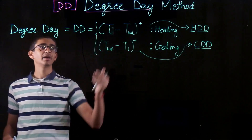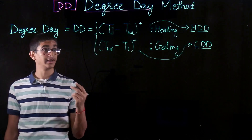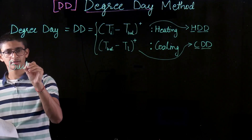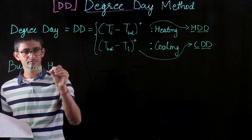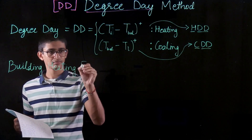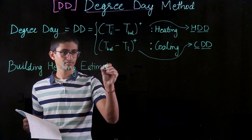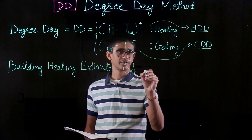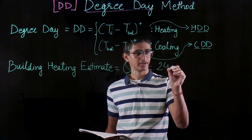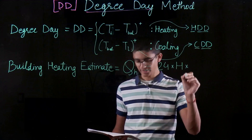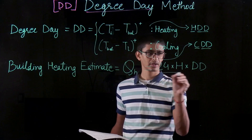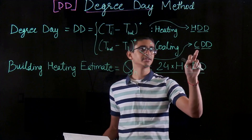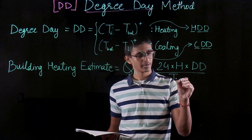The degree day method helps us estimate heating loads — the building heating estimate. It is represented as Q_H (heating) = 24 × H × DD / (T_i − T_out), where DD is the heating degree days. For a cooling estimate, we would use CDDs instead.